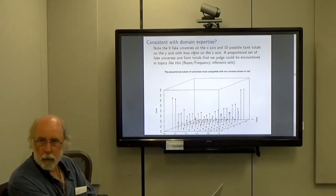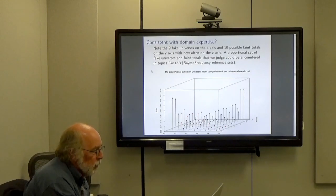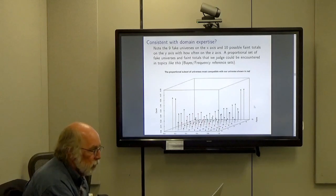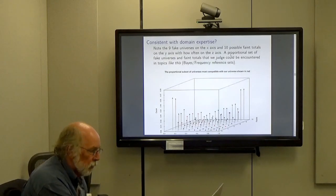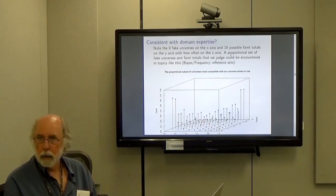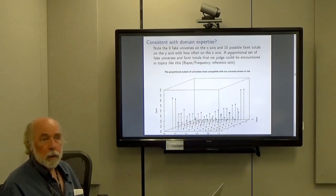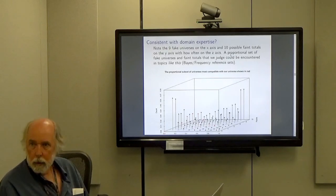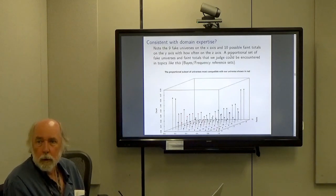The first premise is on the left, which is the joint, the set of fake universes. Do they adequately represent our grasp of reality? As in an artist's pencil sketch. When an artist sketches someone's portrait, there's no color, the size is wrong, but there's something about reality they've captured that's useful. That's what I mean by adequately represent. And note, the conclusion in red on the right is clearly contained in the premises. So the old QED from that. This is a graphical proof that it's deductive. We need to have a proportional set of fake universes and faint totals that we judge could be encountered in topics like this.